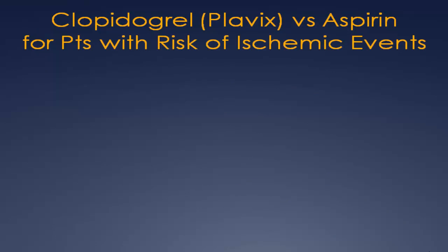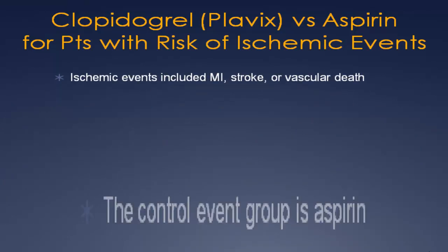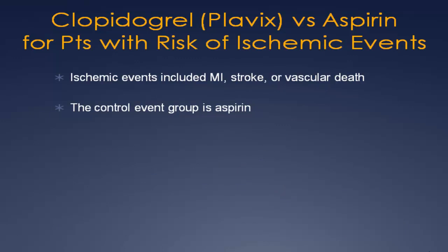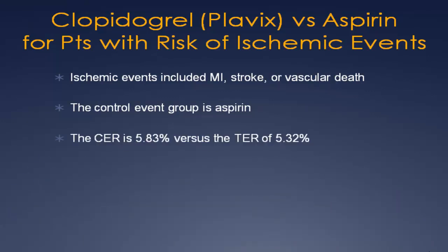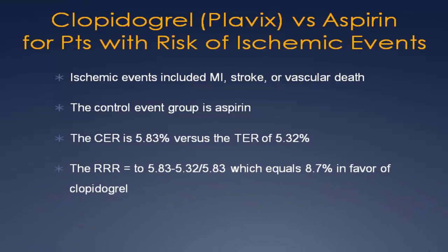Let's use a medication example. A recent research study compared the reduction of ischemic events in patients using clopidogrel — brand name Plavix — versus standard aspirin. The study indicated that the improvement using Plavix versus aspirin was 8.7%, a small number but possibly significant given the seriousness of the outcome: ischemic events including myocardial infarction, stroke, or vascular death. Let's look under the hood. The ischemic event rate in the aspirin group was only 5.83%, and in the Plavix group it was 5.32%. That does work out to an 8.7% advantage for Plavix if calculated as a relative risk reduction — which is 1 minus the risk ratio. But subtract the event rates in both groups, and you get 0.51%.